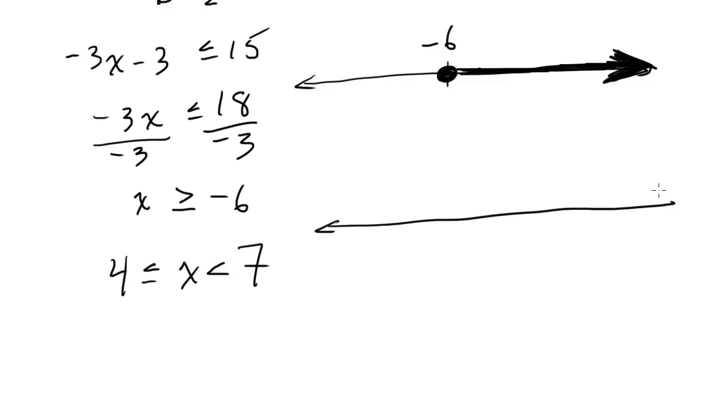So one boundary is 4, and that's a closed circle because it's less than or equal to. Another boundary is 7, but that's an open circle because there's no equal to sign here, and then it's everything in between, so I would go ahead and shade things in here. So that would just be the number line way of representing that, if it ever came up. But that is pretty much it with inequalities.